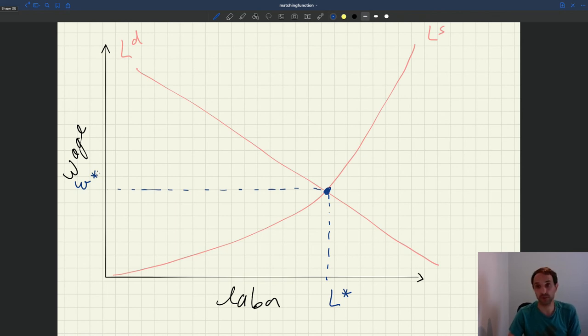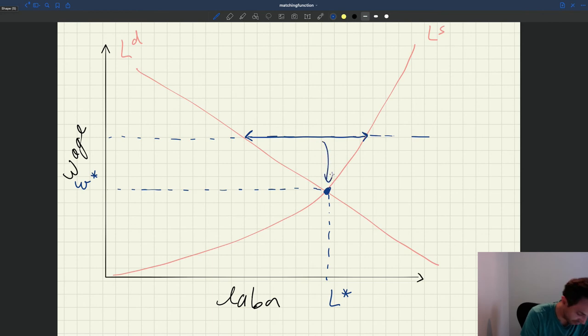The story that we tell behind this type of mechanism is that if you have a wage that's above W star, then basically you have more people who want to work at that wage than currently have a job. So the people who want to work, they would lower the wage that they require, and your wage would at the end fall until you get to your equilibrium.